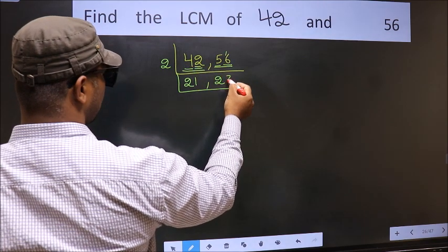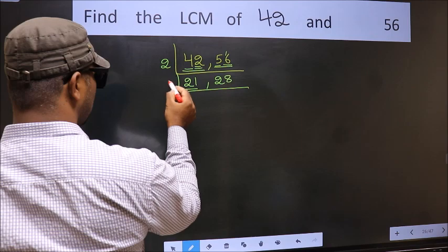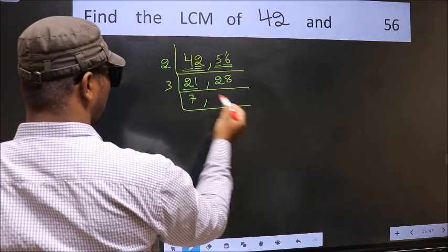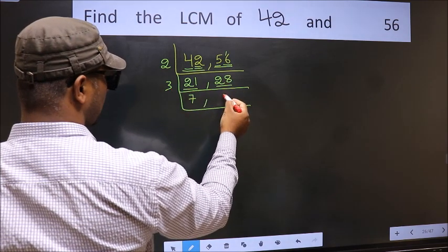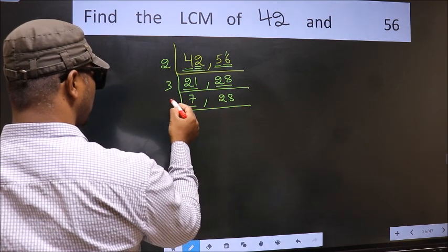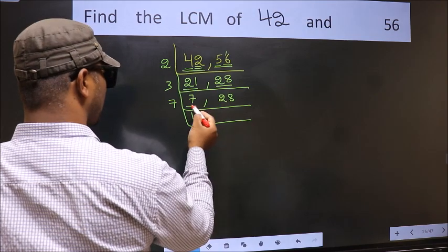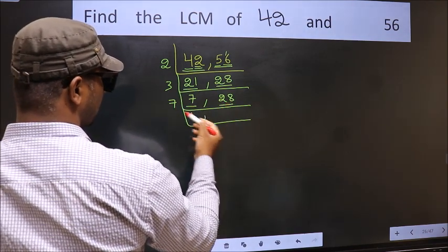Now here we have 21. 21 is 3 times 7 equals 21. The other number 28 is non-divisible by 3, so we write it down as it is. Now here we have 7. 7 is a prime number, so 7 times 1 is 7. The other number 28 - when do we get 28 in the 7 table? 7 times 4 is 28.